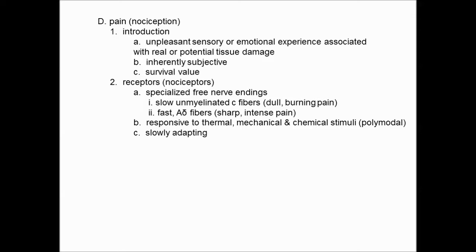We call pain receptors nociceptors — free nerve endings. You would think they would not be very specific, like Pacinian corpuscles or Meissner's endings. But they're very specialized, chemosensitive free nerve endings. There are two primary conductive systems. One is through unmyelinated C fibers — the smallest diameter fibers that conduct very slowly and conduct dull pain. The A-delta fibers are much larger in diameter and faster conducting, and they're responsible for communicating sharper, very intense pain to the central nervous system.